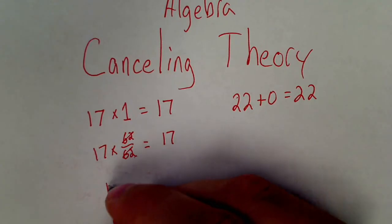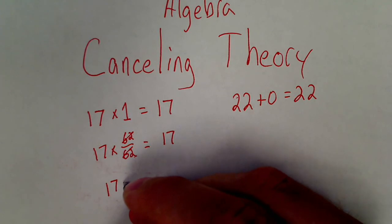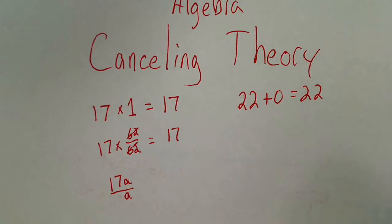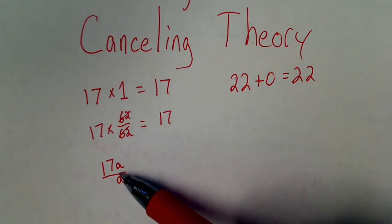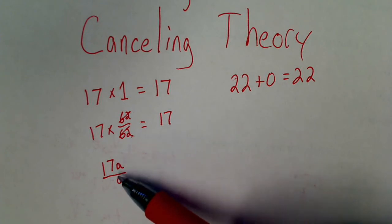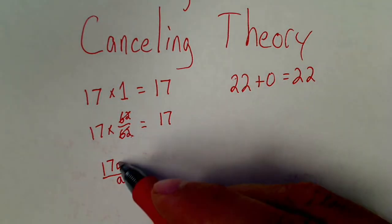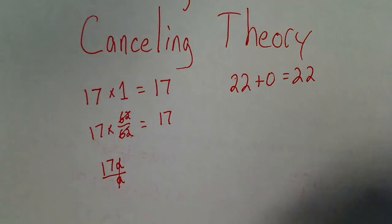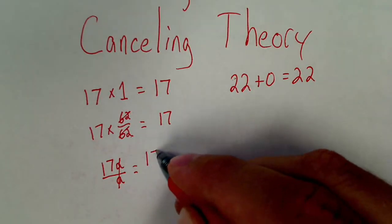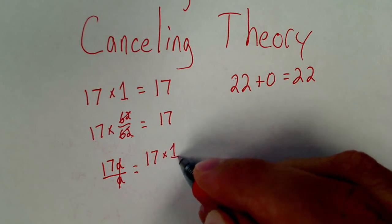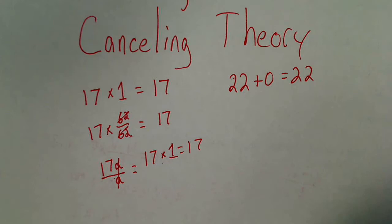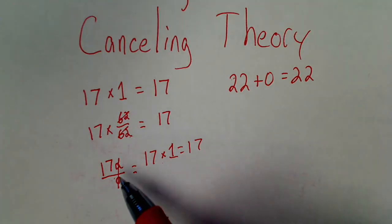The same thing would go if I had 17a over a. Well, a divided by a, it doesn't matter if this is some weird letter. Anything divided by itself is 1. So these a's cancel. When I say cancel, what I'm really writing is that a over a is the same thing as writing 1. That this is the same as this, which is still just 17. Okay, that's what canceling means when we're talking about division.